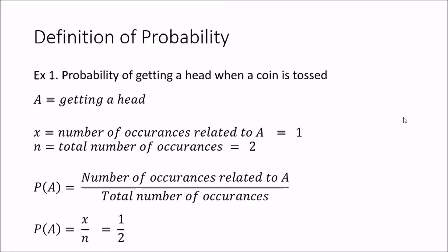In the first example, we are going to look at the probability of getting a head when a coin is tossed. When I toss a coin, there can be a head or a tail. My event is getting a head, so the number of occurrences related to it is 1, because when I toss a coin I can get only one head or one tail.